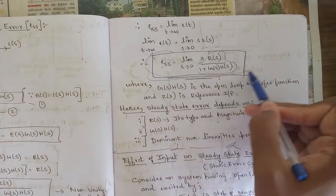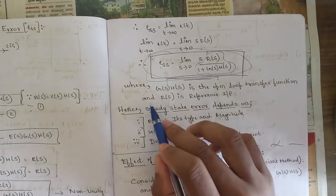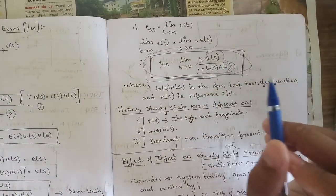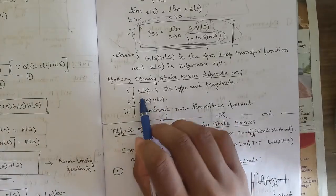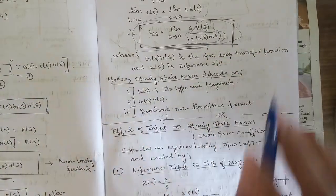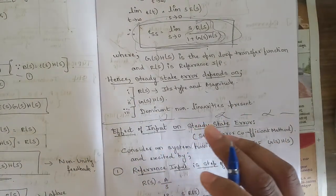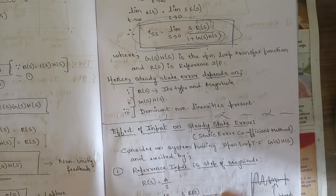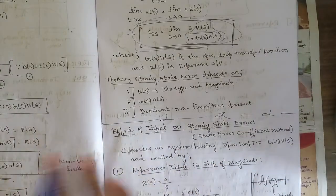In this formula, G(s)·H(s) is the open loop transfer function and R(s) is the reference input. The steady state error depends on a few conditions: the type and magnitude of R(s), the open loop transfer function G(s)·H(s), dominant non-linearities, and changes in inputs — all of which affect how much time it takes to reach steady state.